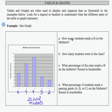So part A says how many students made a B on the midterm. We know that from reading our table already. That would be seven students made a B on the midterm.